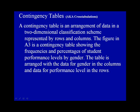Earlier we looked at frequency distributions as a way of studying one variable or data element. To compare results of two or more variables, such as performance level and student gender, two frequency distributions — one for females and one for males — could be generated and lined up side by side. An even simpler approach is to do a contingency table, also referred to as a cross-tabulation.